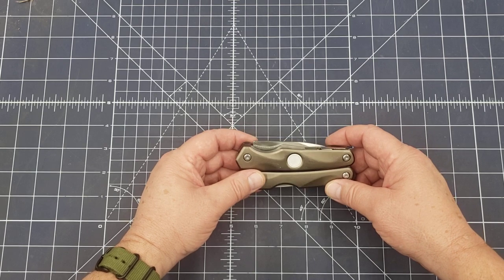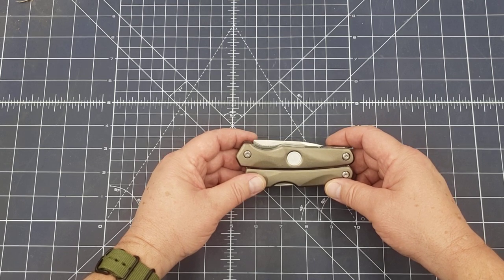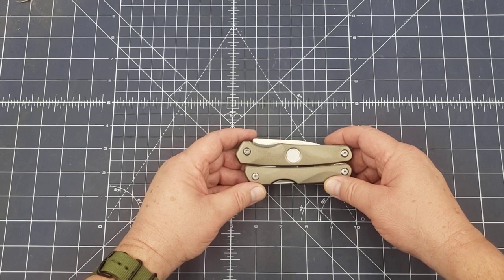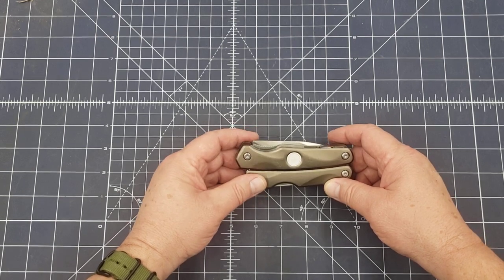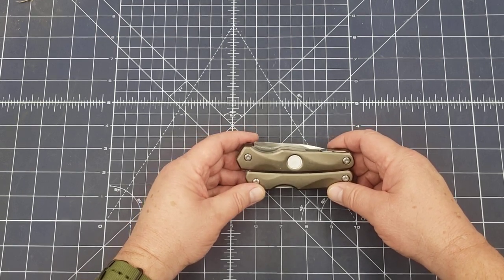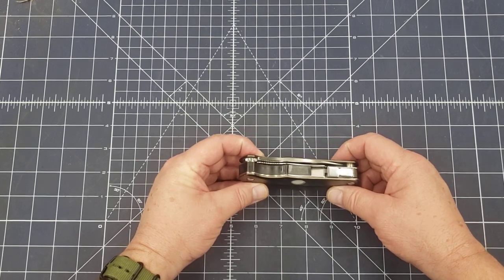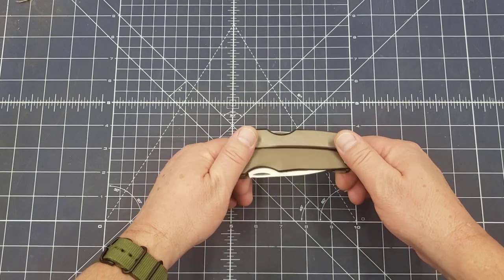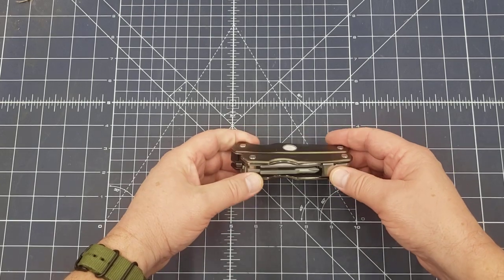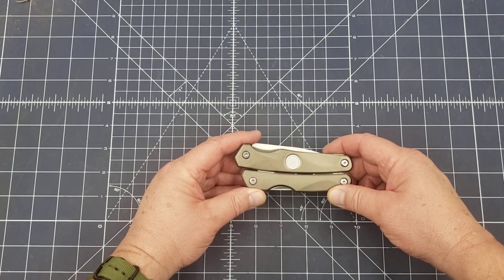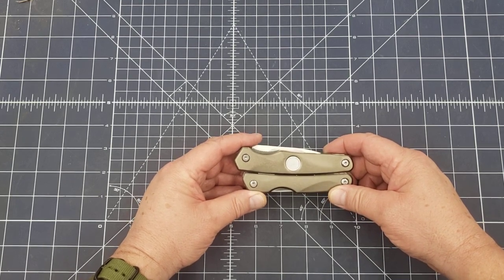So what we're looking at here right now is the Klein model 44216, which was an electrician's multi-tool. I think they called this a seven-in-one. This was introduced to the U.S. market in May of 2018, I think was the first availability on this,